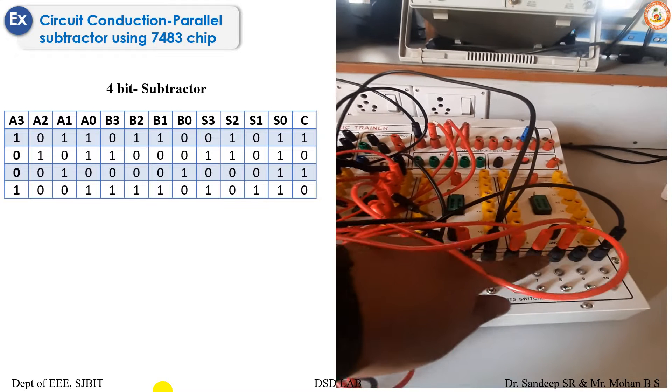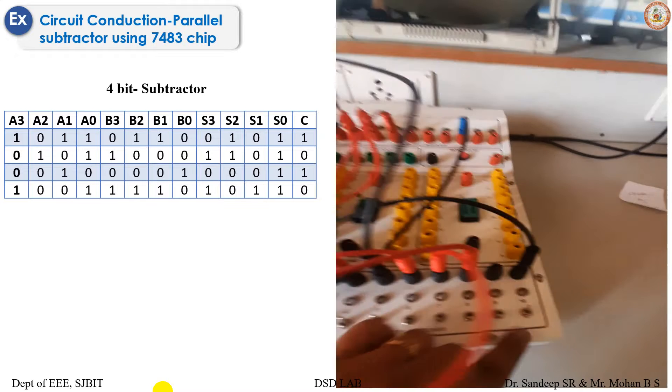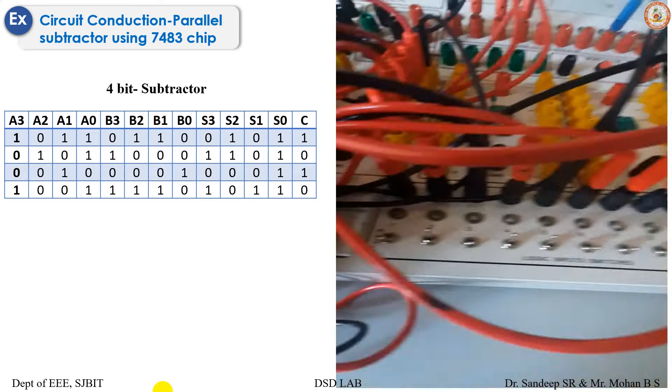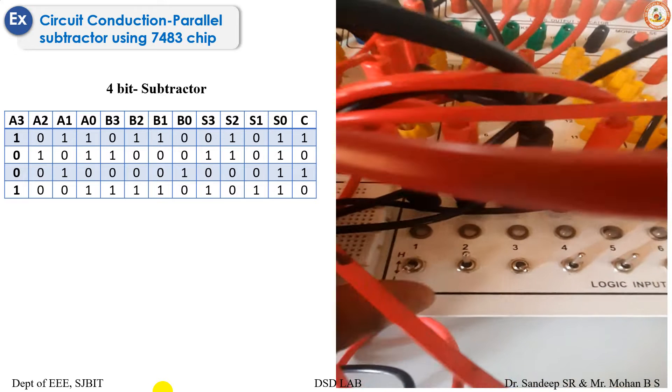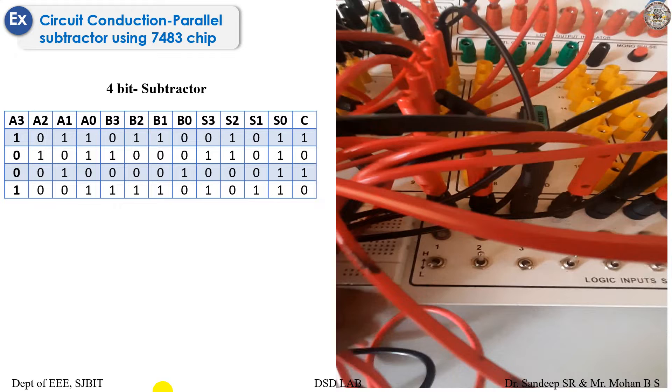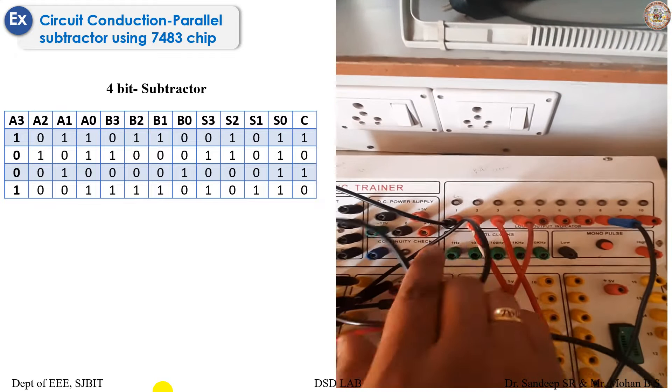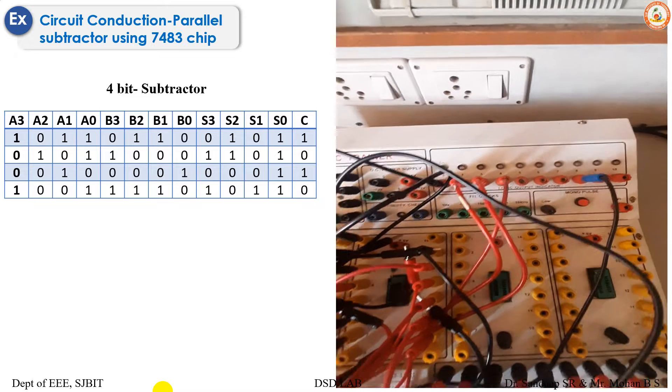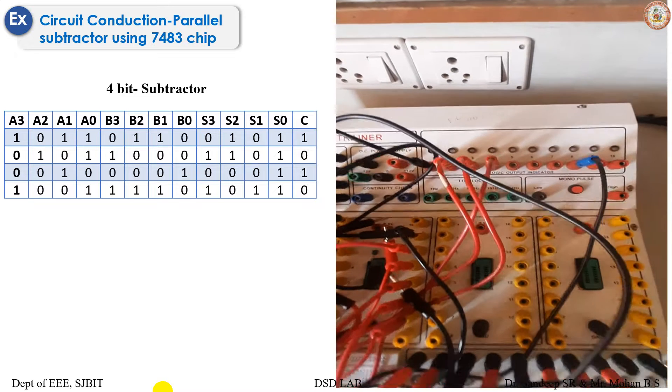B3, B2, B1, B0, and C in has to be kept high. As you can see, we have already kept C in high. As mentioned in the kit, the upper part is high and the lower part is low. These are the respective outputs: S3, S2, S1, S0, and carry in, or borrow to be specific here.